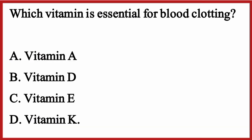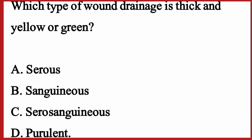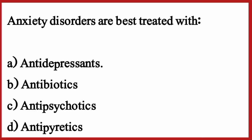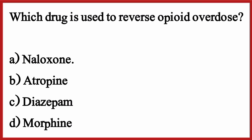Which vitamin is essential for blood clotting? The correct option is option D: Vitamin K. Which type of wound drainage is thick and yellow or green? The correct option is option D: Purulent. Anxiety disorders are best treated with — the correct option is option A: Antidepressants. Which drug is used to reverse opioid overdose? The correct option is option A: Naloxone.